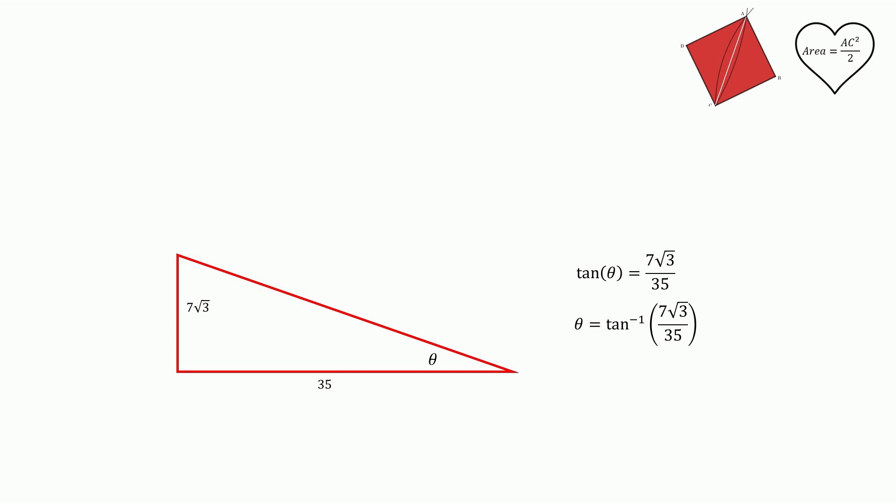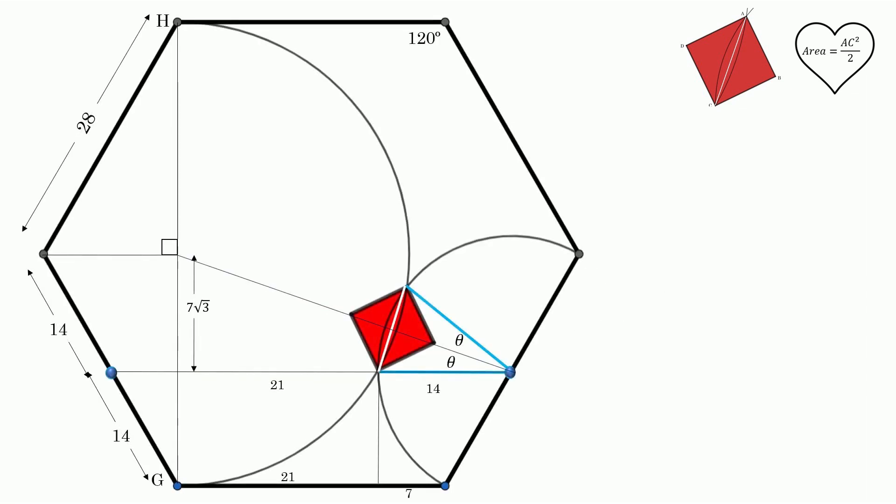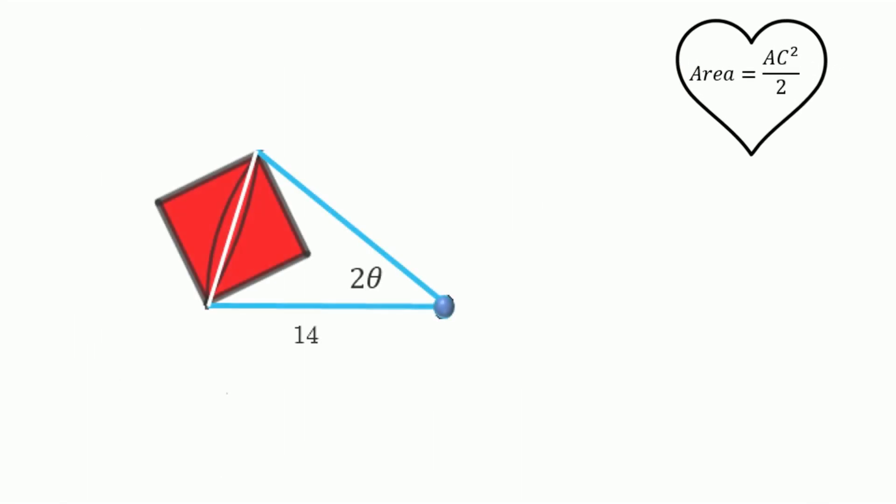I'm not going to go ahead and figure out what that is yet. I'm going to tuck that away and come back to it in a minute. But just so we know where that fits, each one of those angles is theta. So together they make 2 theta. Let's go ahead and zoom in on this shape again right here. So I know I've got 14. I called the top A, the bottom C. We're looking for AC. And I know that 2 theta would be 2 times arctangent of 7 root 3 divided by 35.